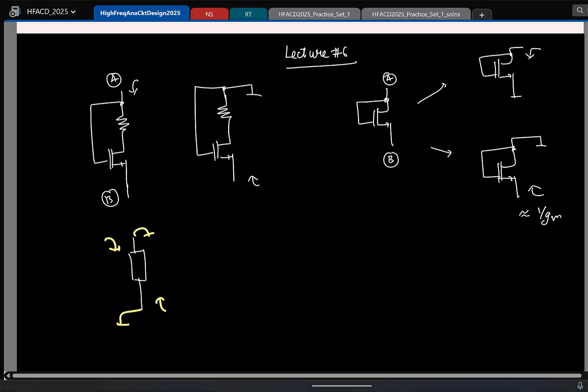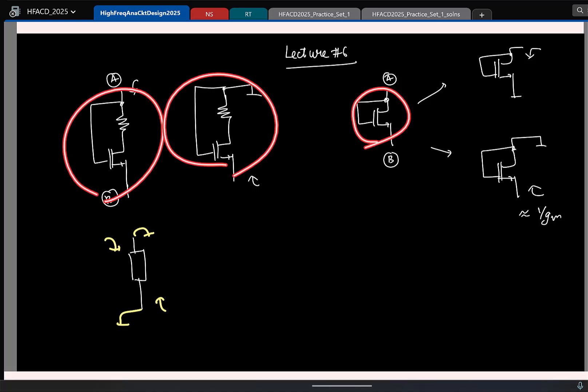So the point is, any time you see this thing in a circuit, the first reflex should be to replace it with an equivalent resistance of whatever values. So at this point I expect some question, but since no one is asking that question, I will ask it and answer it myself.